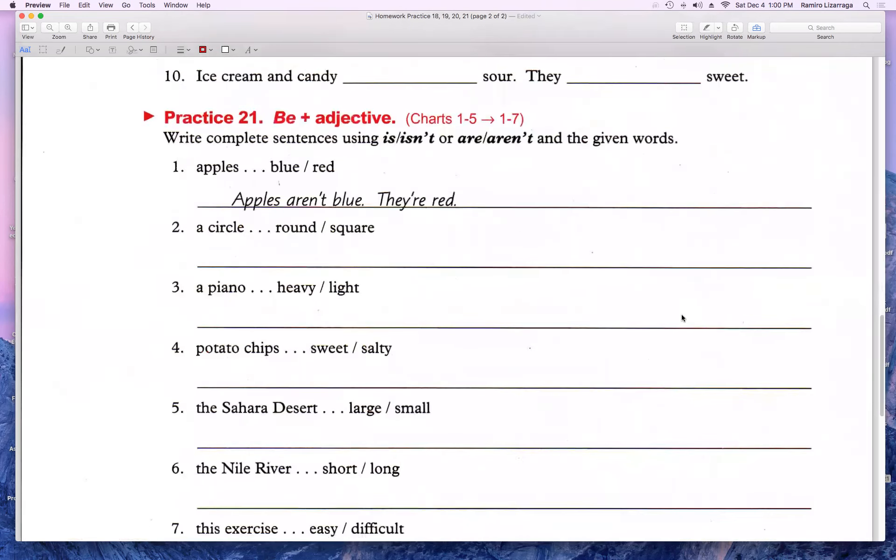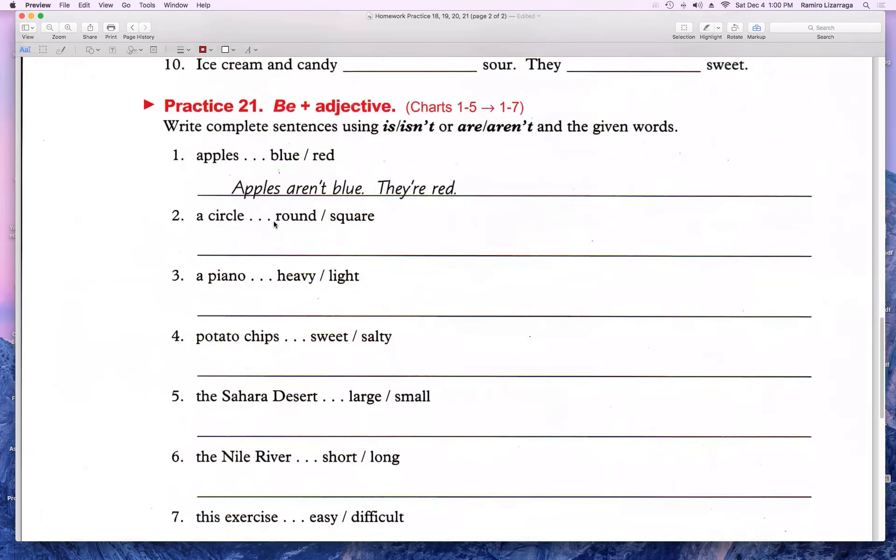Vamos para acá, a la 21. ¿Qué van a hacer en la 21? Fíjense cómo ya igual quieren que usemos el is, el isn't. Pero ya nos están dando las palabras. Yo les voy a hacer la 2. Miren aquí. A circle. Yo voy a decir a circle is round. Estoy afirmando. ¿Por qué afirmé y no negué? Pues porque round si va con un círculo. Porque esto sí es una afirmación. Sí es cierto. Un círculo es redondo. Is round.